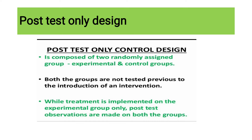Post-test only control design is composed of two randomly assigned groups — that is, an experimental group and a control group. Both groups are not tested previously, meaning there is no pre-test for either group. Both groups are equivalent at baseline because no pre-test is conducted for either the experimental or control group.